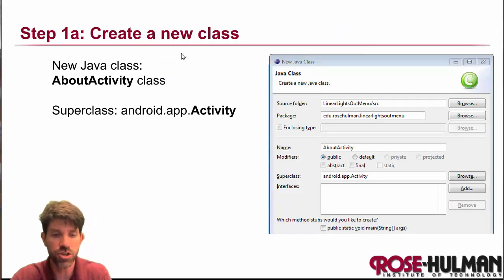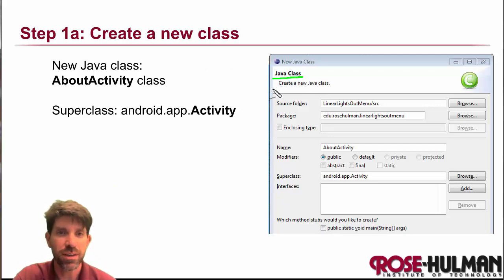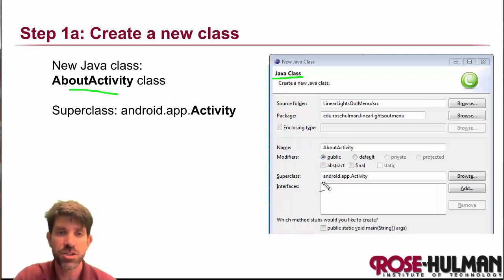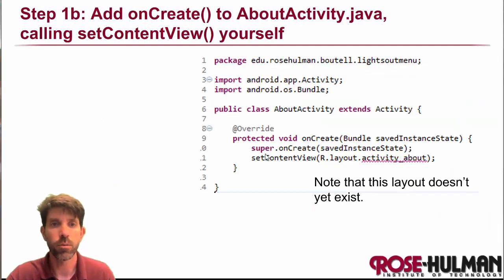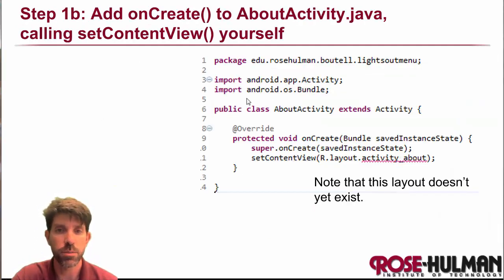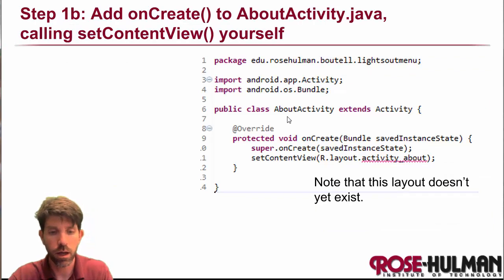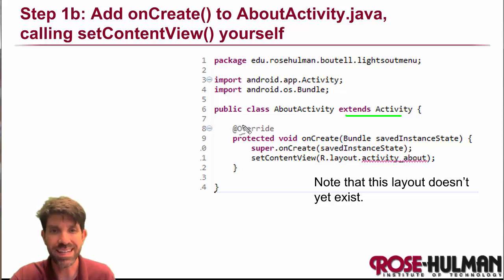The first thing is creating a new Java class — nothing special. Right from the beginning you've been making Java classes. We're going to make one called AboutActivity, and its superclass is going to be Android's Activity. It will bring up a new file that extends Activity, and we need to make onCreate from scratch.